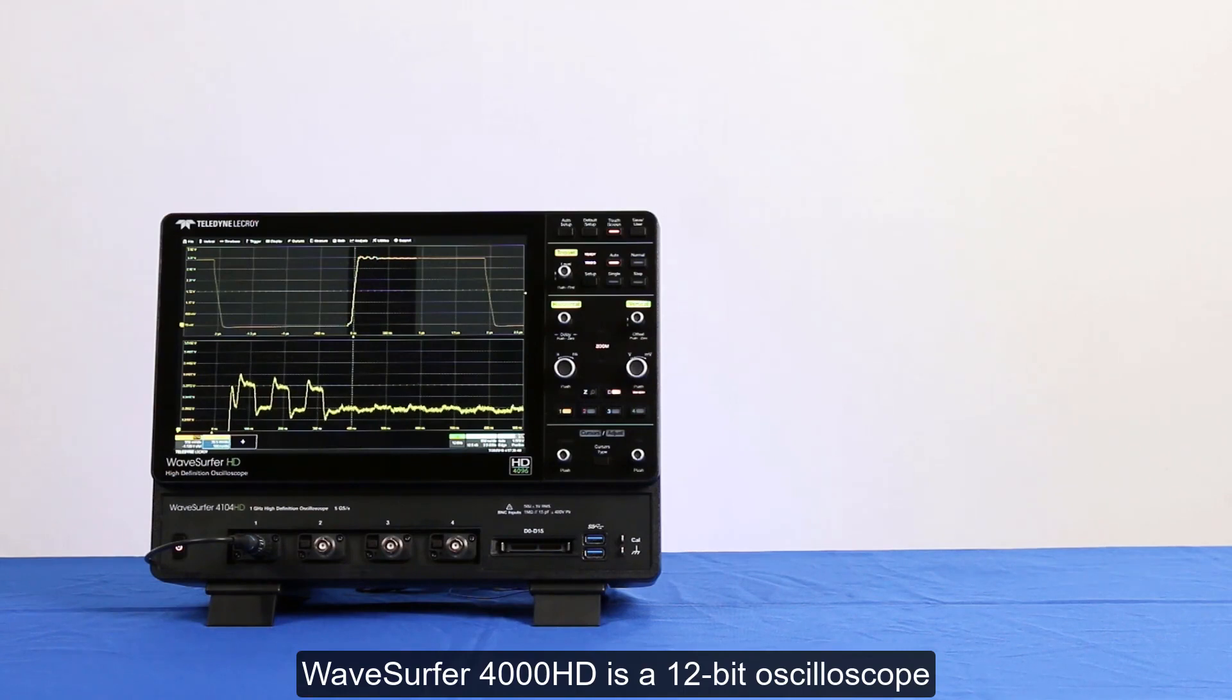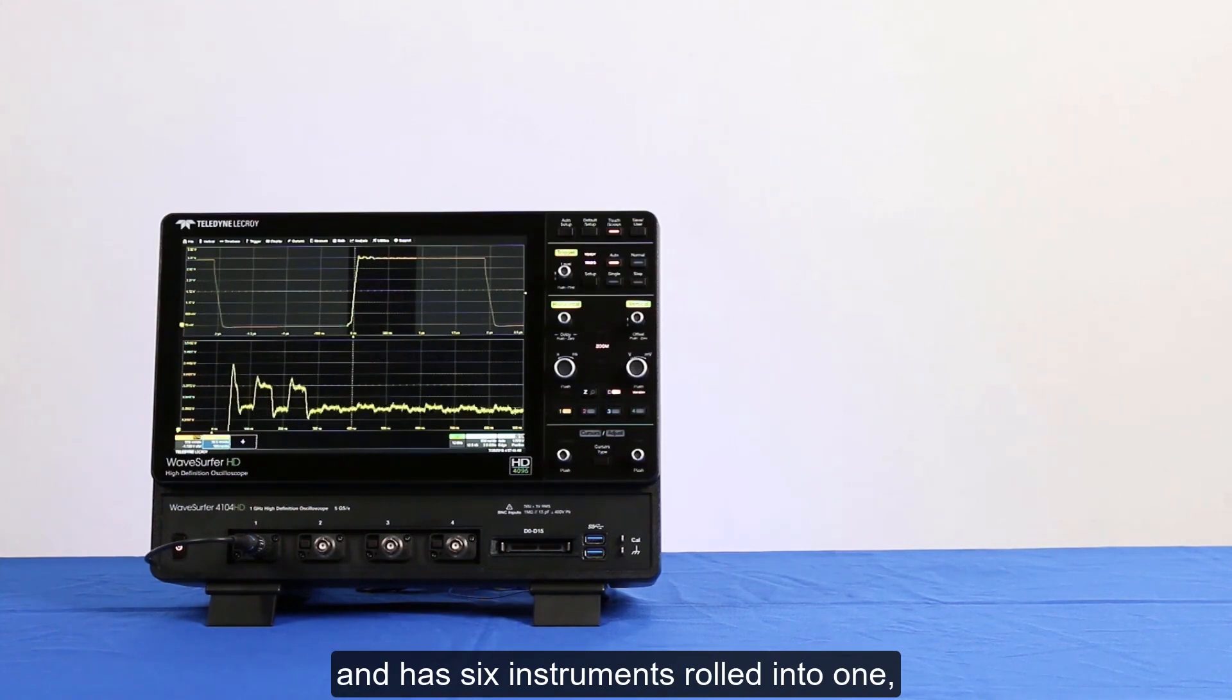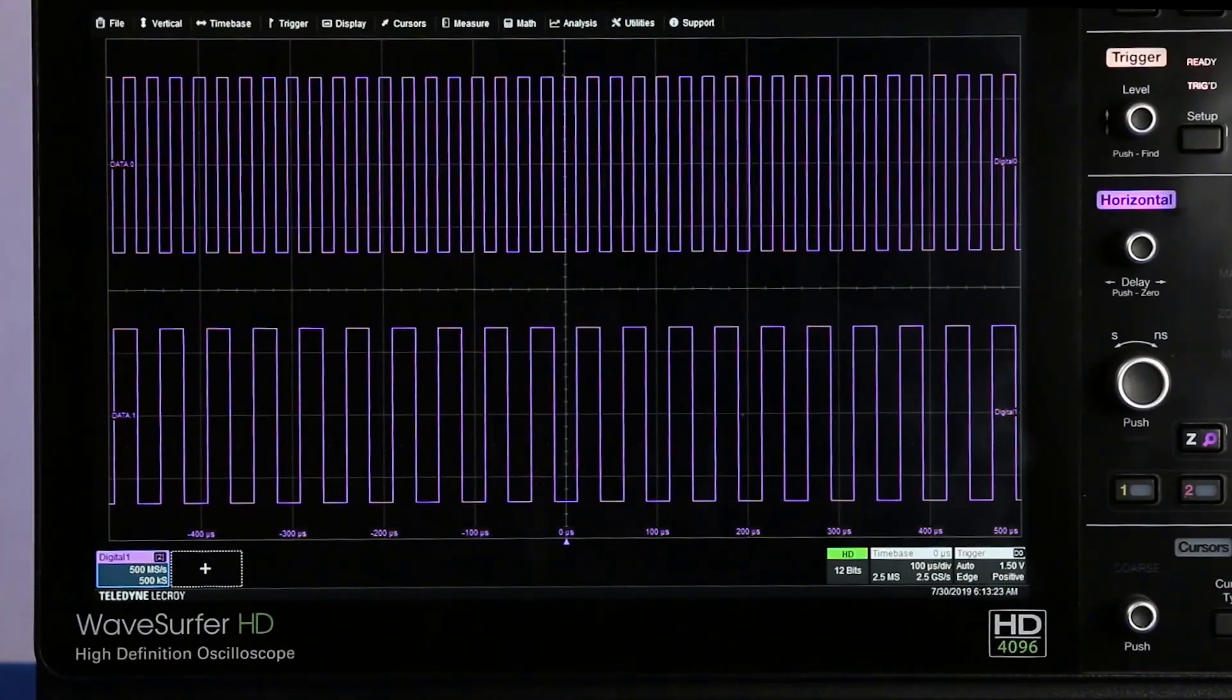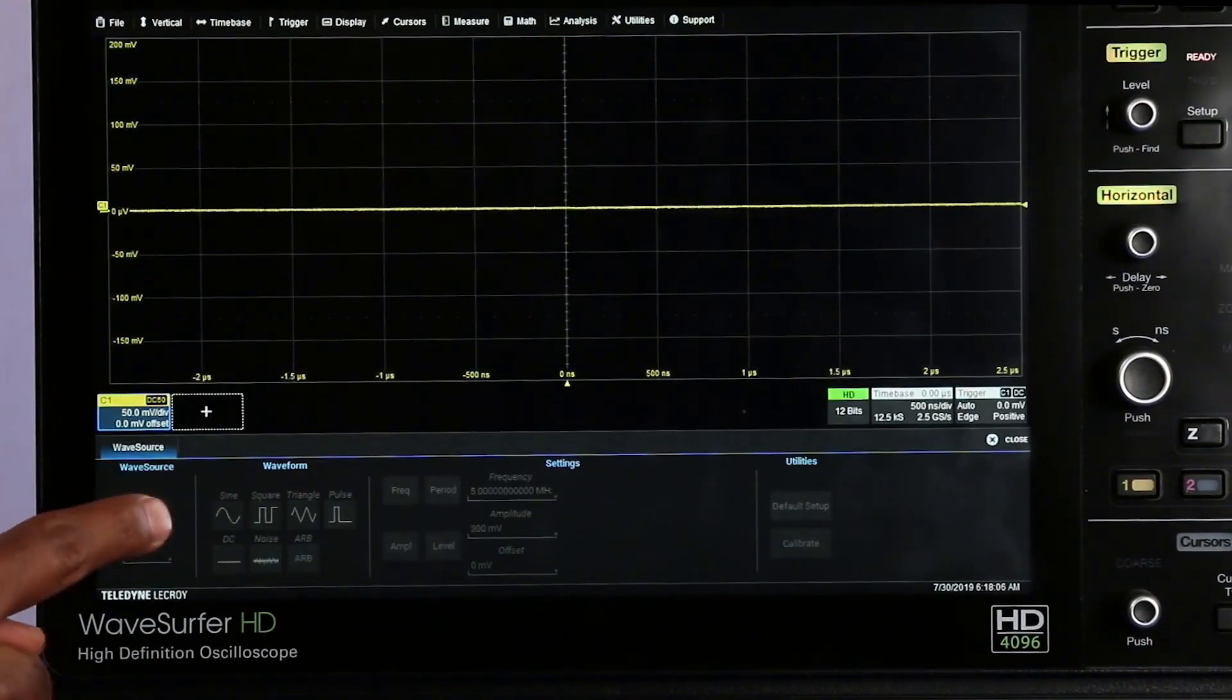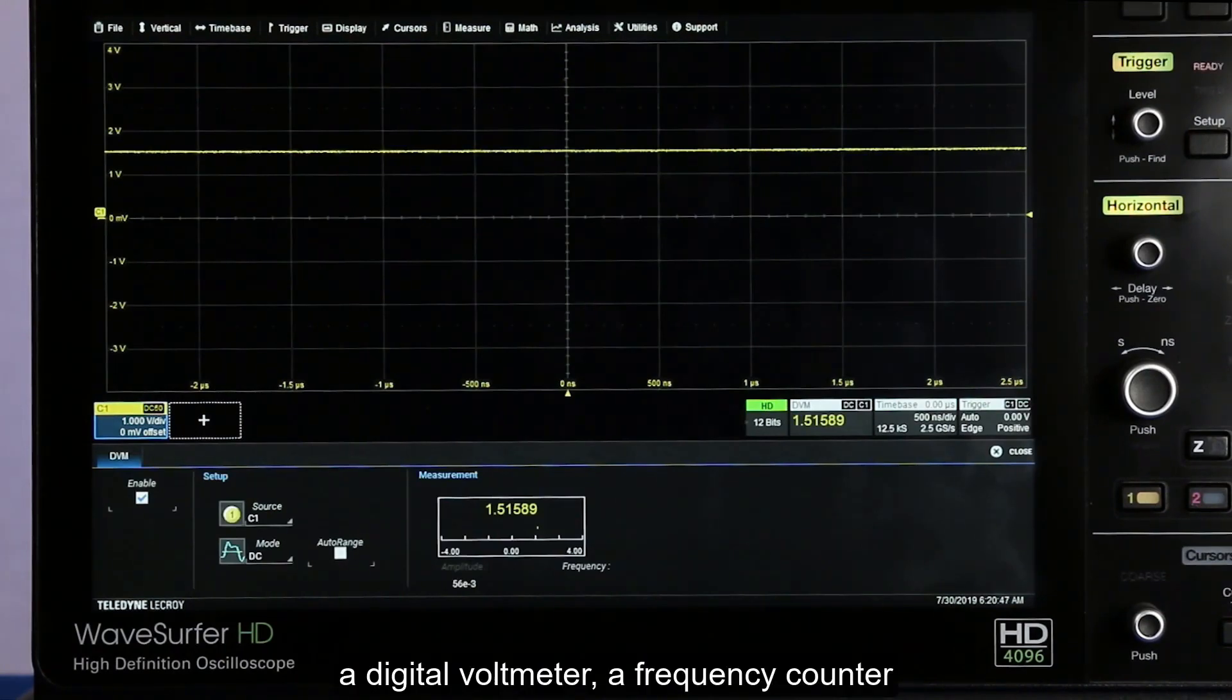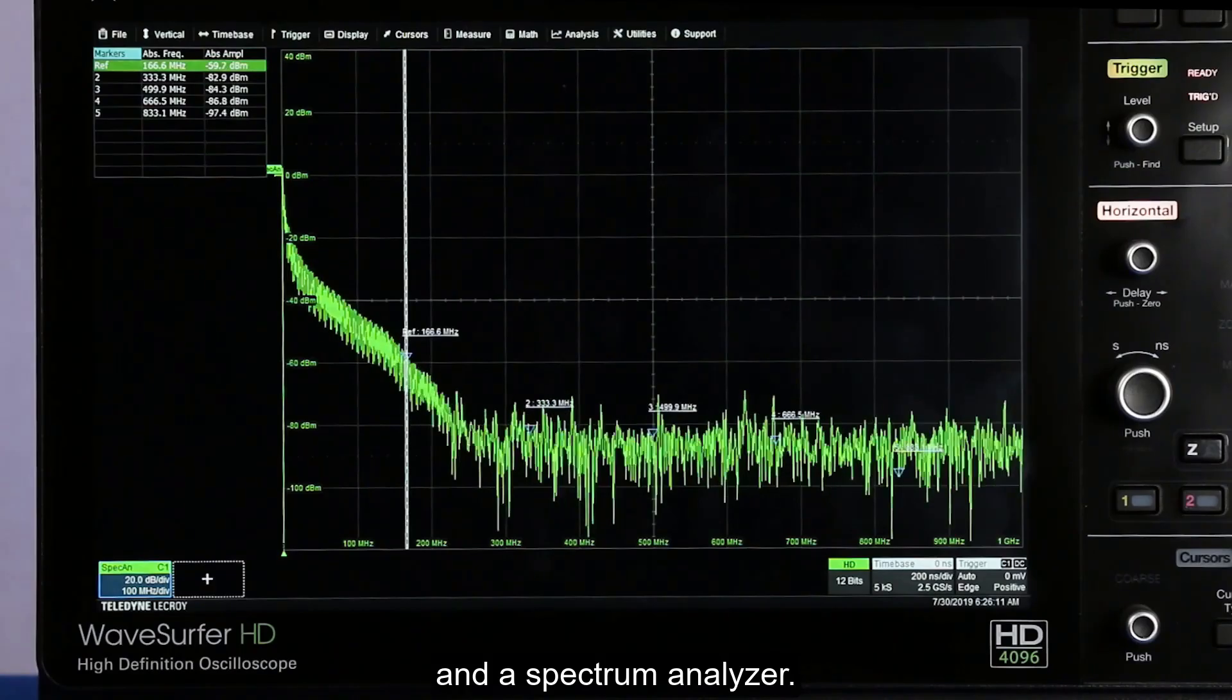WaveSurfer 4000HD is a 12-bit oscilloscope for the price of 8 bits and has 6 instruments rolled into one. An oscilloscope, an MSO with 16 digital inputs, an arbitrary waveform generator, a digital voltmeter, a frequency counter and a spectrum analyzer.